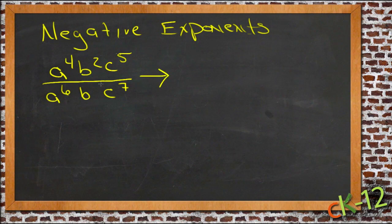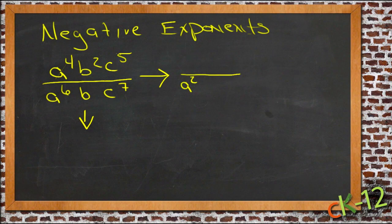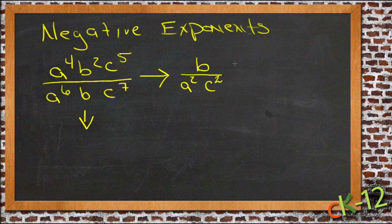I'm going to simplify this expression in two different ways. First, I'm just going to cancel the things that can be cancelled. So I get a to the fourth into a to the sixth, so my four a's on top are cancelled and I leave a to the second on the bottom. Then if I do the same thing with the b, I have two b's on top and I cancel with one on the bottom, so I end up with just a b on top. And then with the c's, I have five on top and I cancel them with five of the seven on the bottom, leaving c to the second on the bottom. So one way to simplify this expression would be b over a squared c squared.